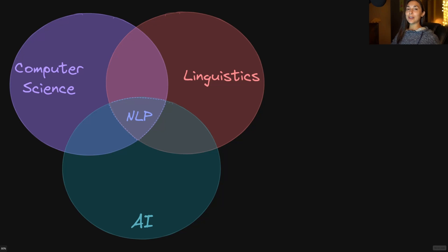Welcome to the DeepLizard course on deep learning for text classification. I'm Mandy and I will be your instructor for this course. This course provides an introduction to the field of natural language processing, or NLP, with a focus specifically on the use of artificial neural networks for text classification and sentiment analysis tasks.